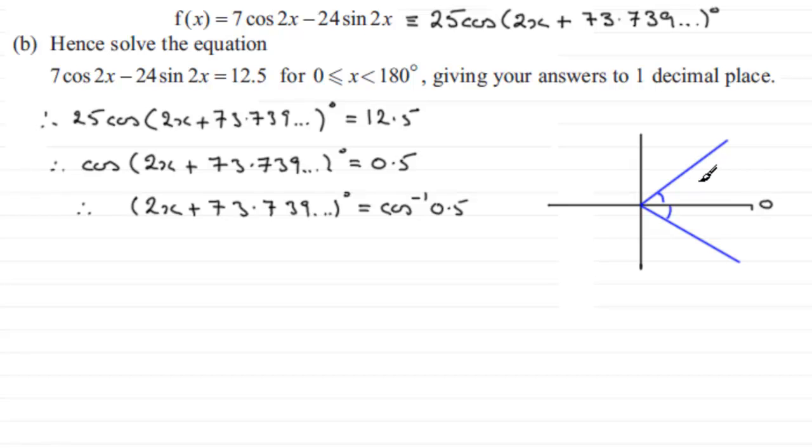Now we're looking for x to be between 0 and 180 degrees. So we start from the 0. We turn in an anti-clockwise sense because that's the positive sense to the first line here. And this angle in here, let's just mark it like so, this angle is a possible 2x plus 73.739 odd degrees. So let's just mark that in. I might not have enough room so we'll just mark that as 2x plus 73.7 for the time being.